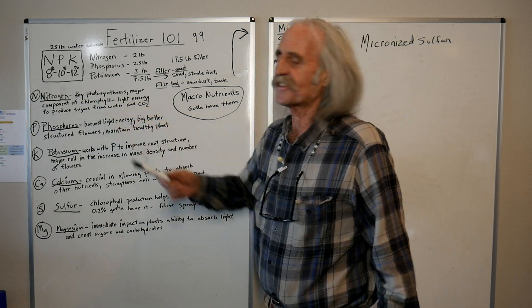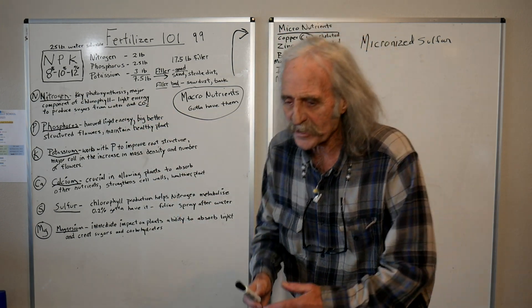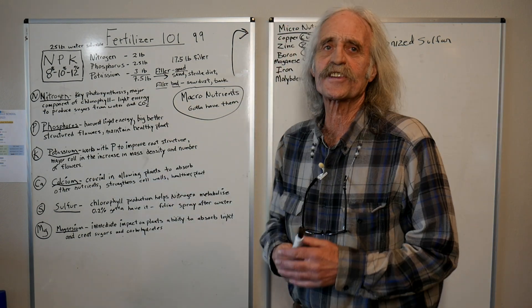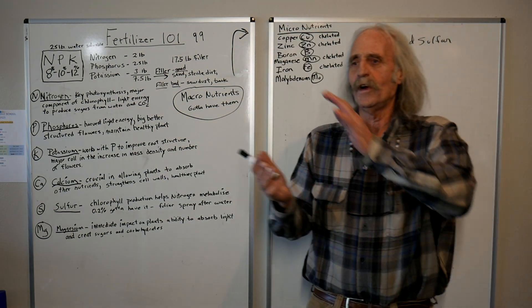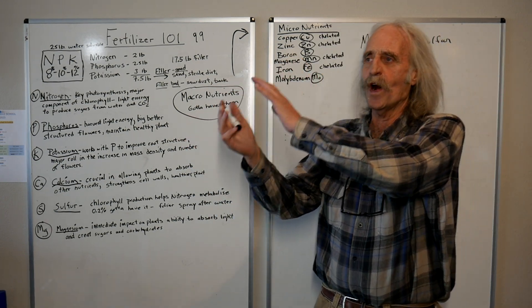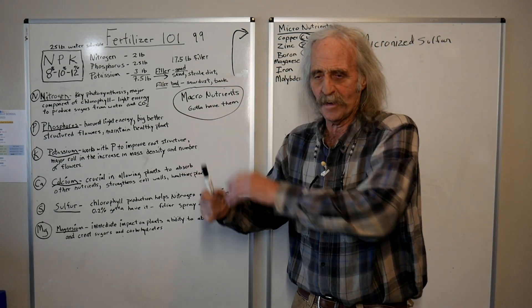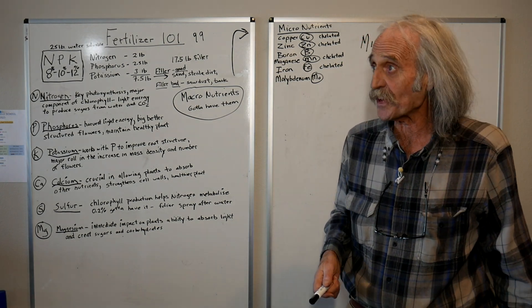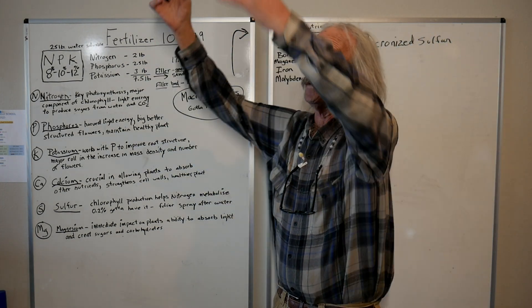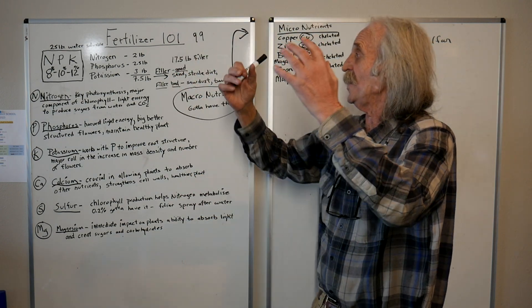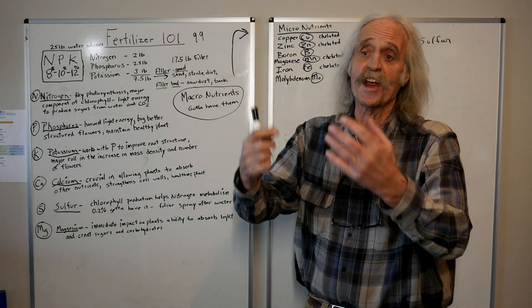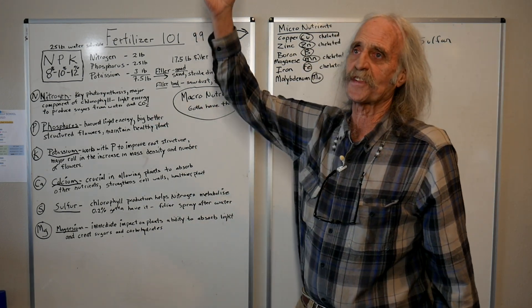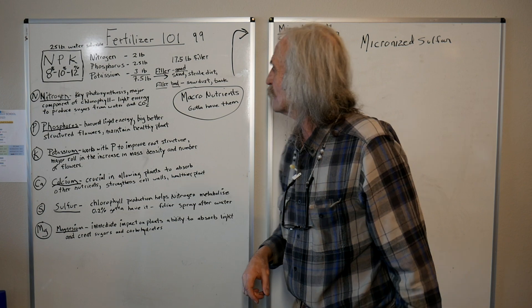All right. Nitrogen. It's the key. It makes the plants grow. It's the key for photosynthesis. It's a major component of chlorophyll. You know, we all know that chlorophyll is green. The green comes from the photosynthesis, from the photons from the light energy, produce the sugars as it sucks up the water from the plant and it sucks in the CO2 from the atmosphere.